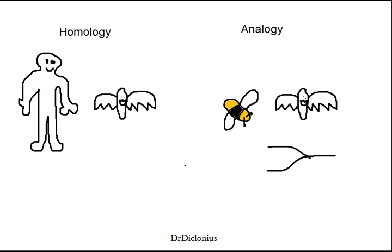Another important concept is vestigial structures. Vestigial structures arise due to evolution — from not using a certain part of the body or a particular organ for long periods of time. For instance, we could say that the appendix is a vestigial organ. In humans it doesn't really have a function. We could also say that the hind legs of a whale are vestigial structures.